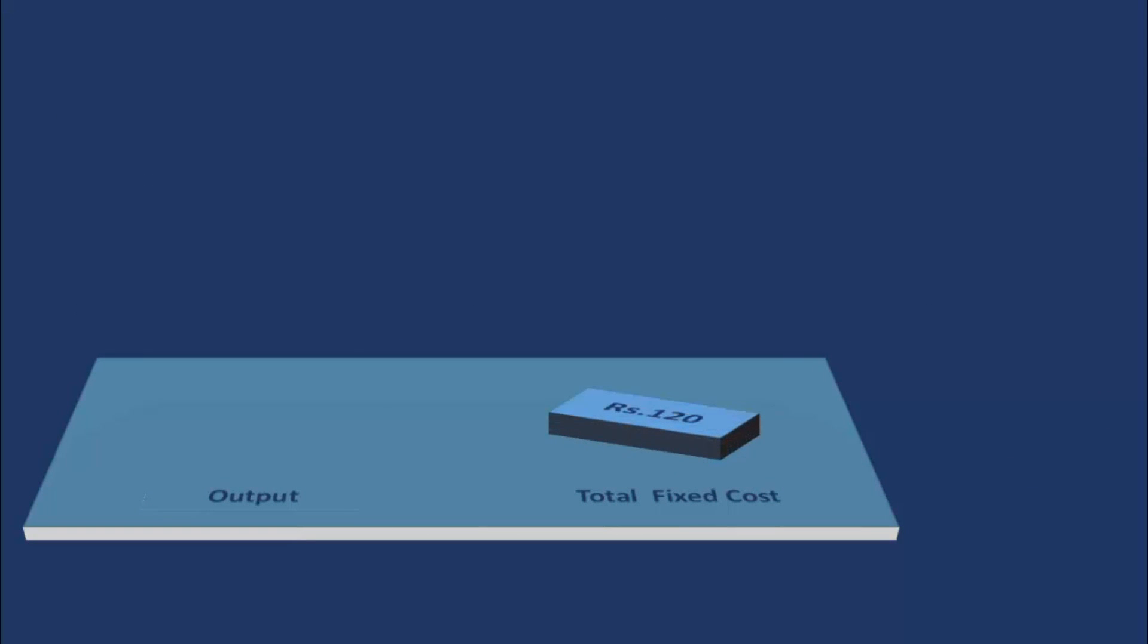The figure shows this. The fixed cost in our example is Rs. 120. But there is no output. We shall tabulate this value. Output is zero but total fixed cost is Rs. 120.